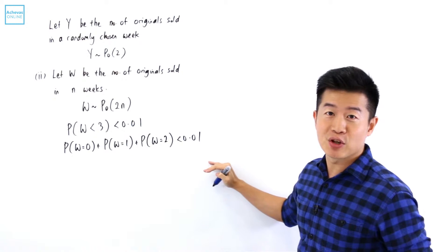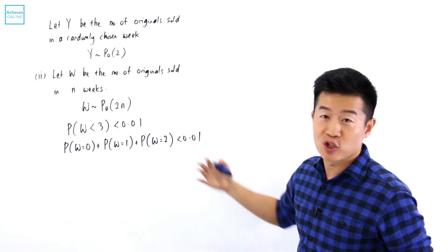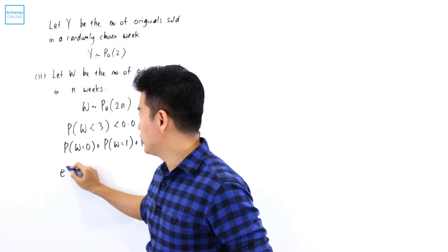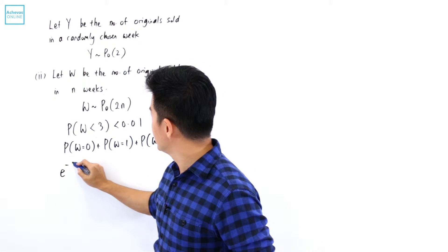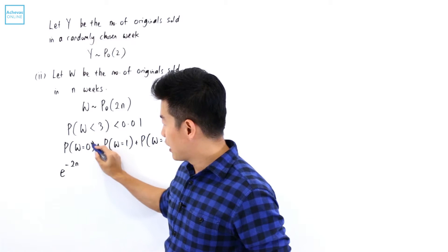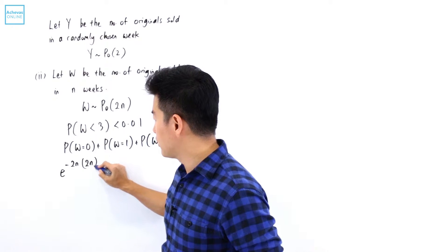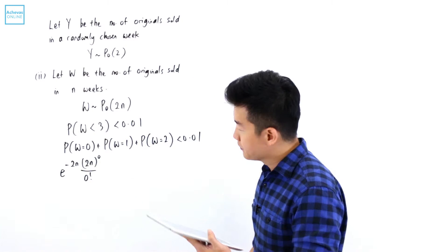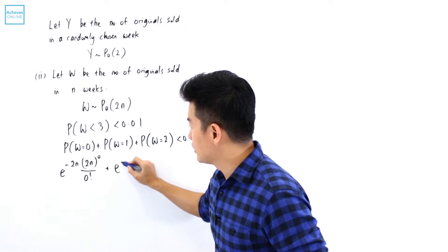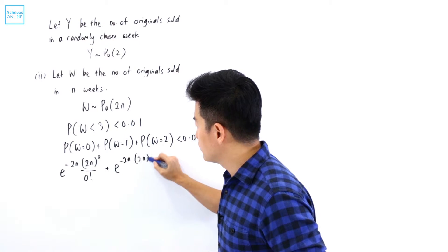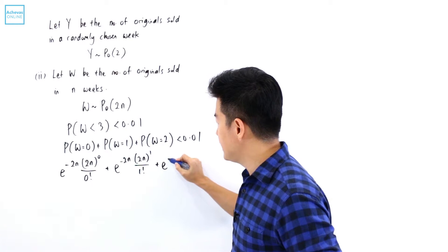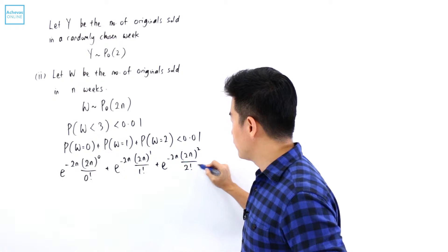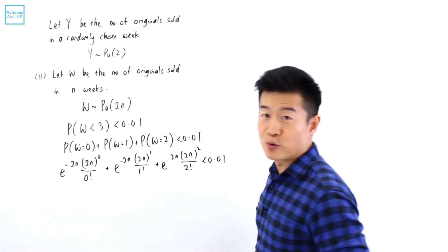To form the inequality in terms of N, we apply the Poisson formula with mean 2N. It is e to the power of minus 2N times 2N to the power of 0 over 0 factorial, plus e to the power of minus 2N times 2N to the power of 1 over 1 factorial, plus e to the power of minus 2N times 2N to the power of 2 over 2 factorial, and this is less than 0.01.